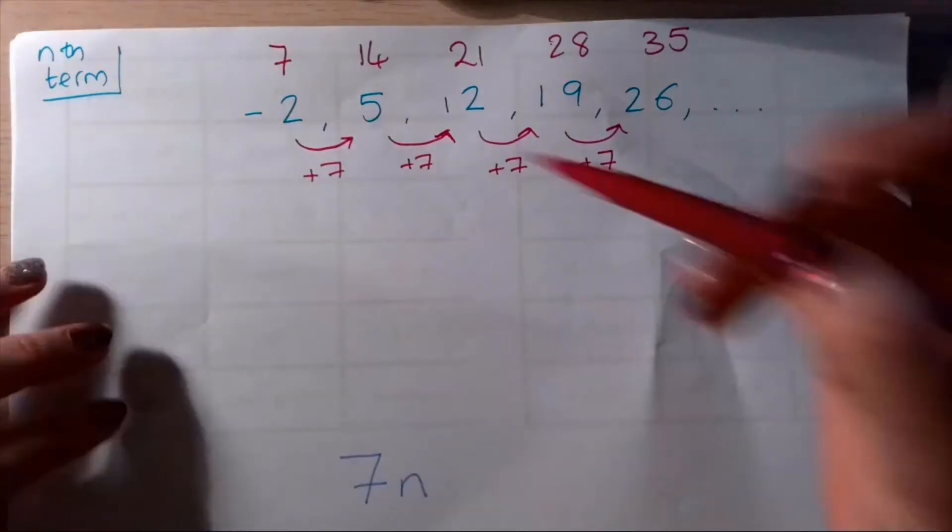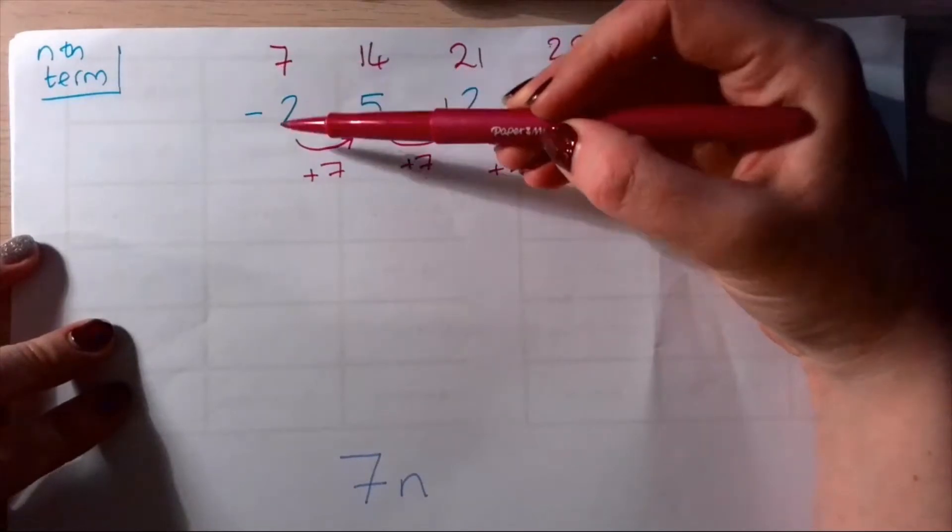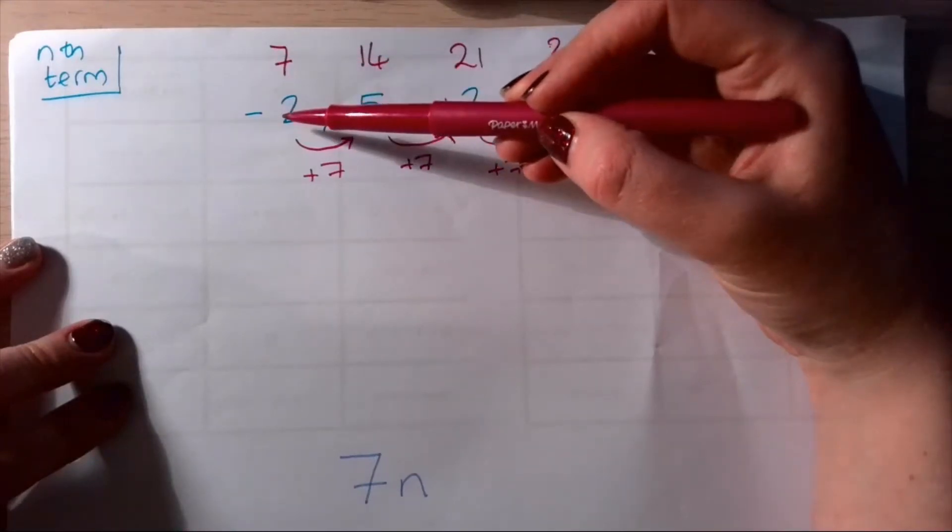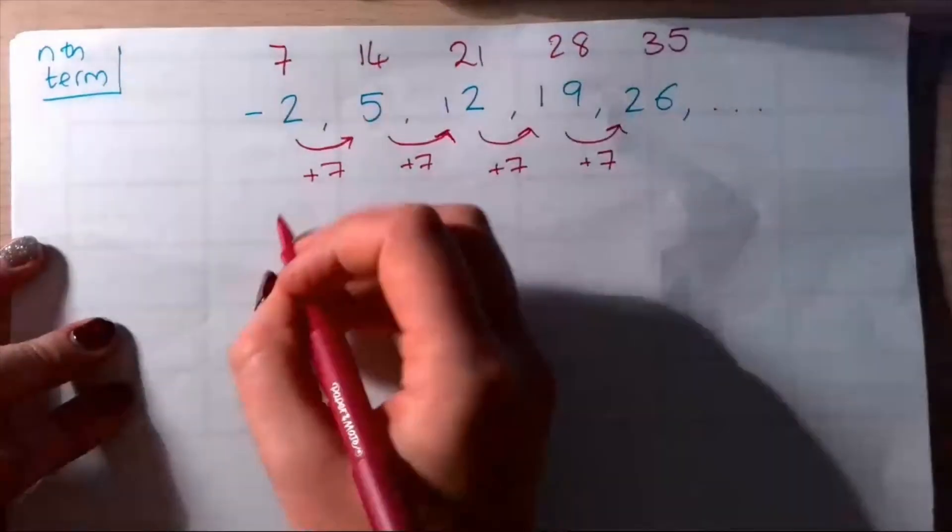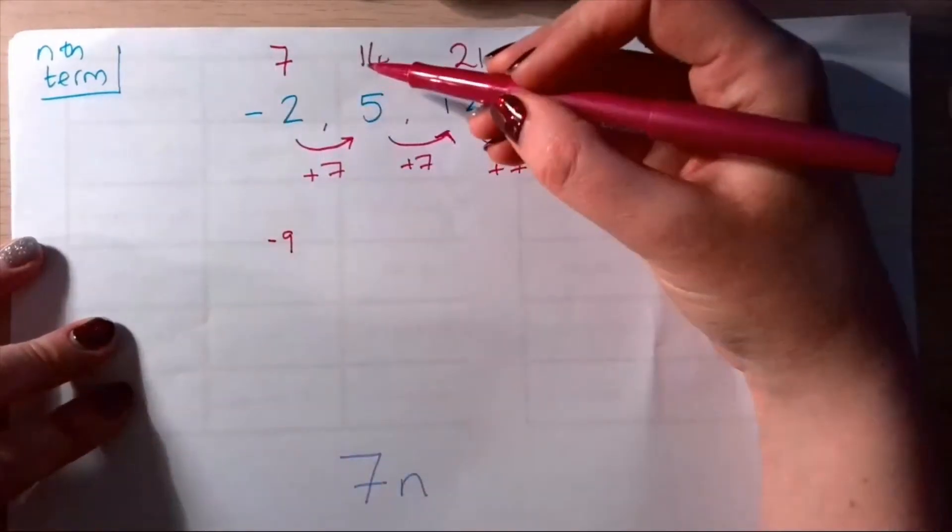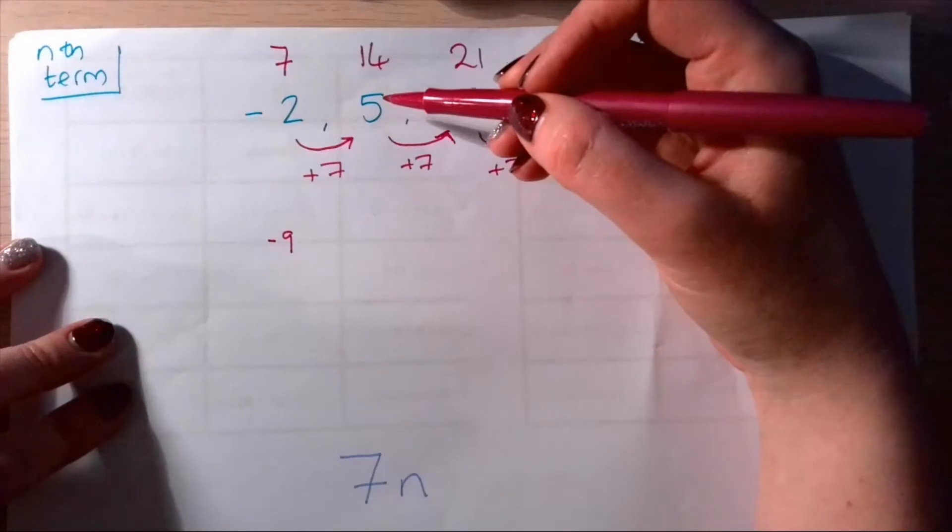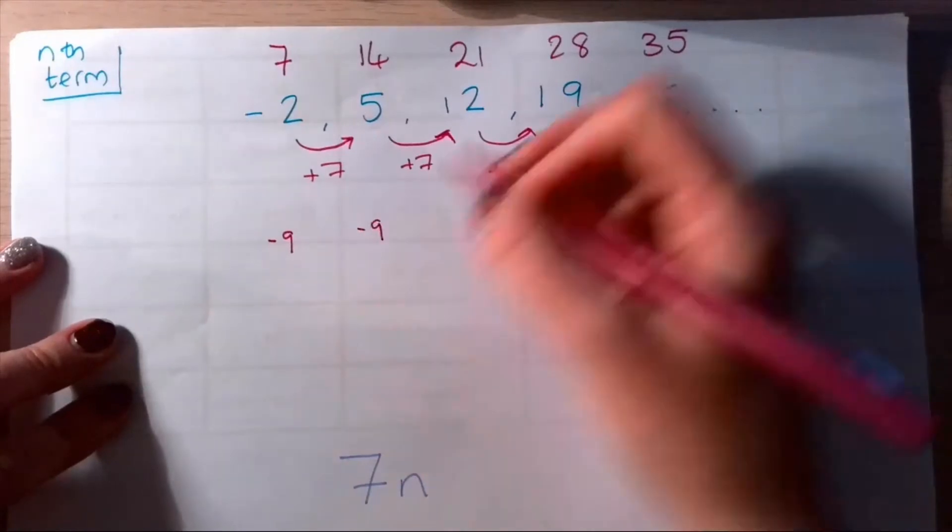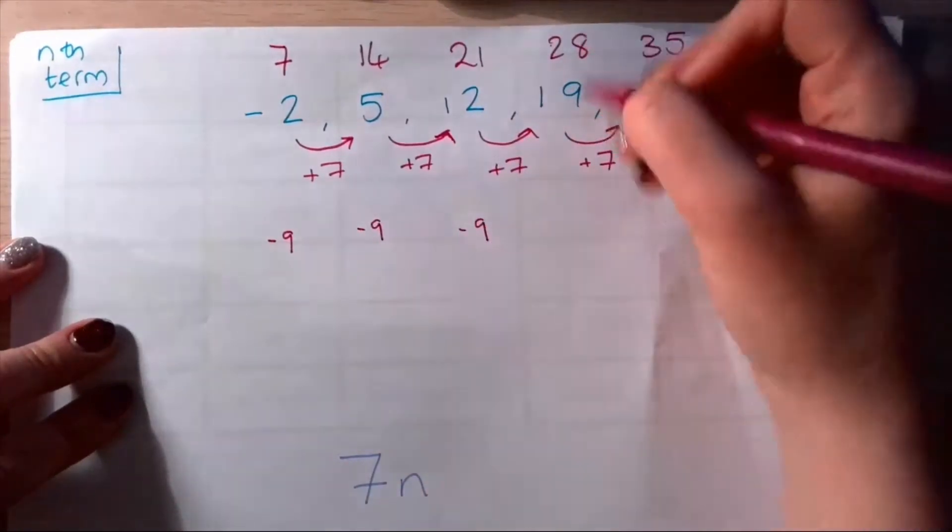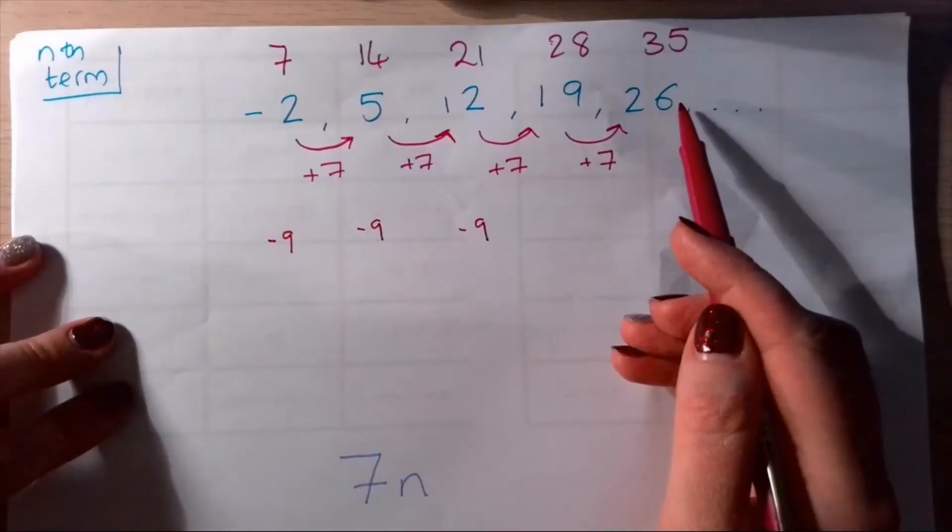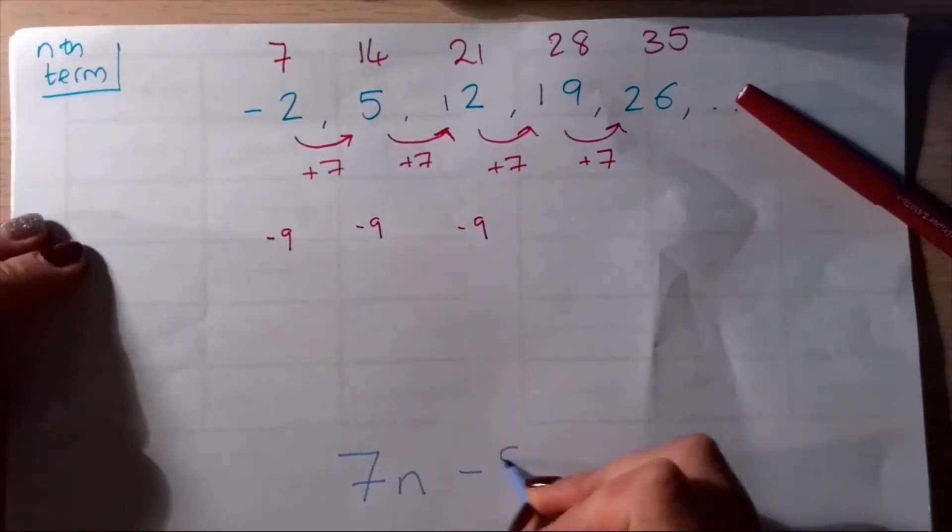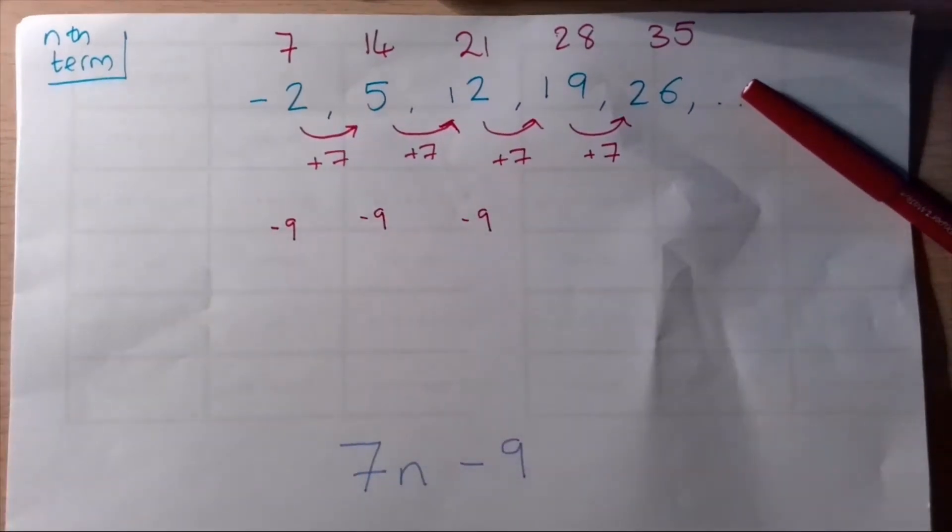Now we're going to say how do I get from seven to negative two? What's the calculation I have to perform? From seven down to negative two, I'm actually subtracting nine. I'm writing it below. How do I get from fourteen to five? I'm also subtracting nine. Each time you're going to see that's what happens. This sequence is our seven times table with nine taken off it. So we're going to have our nth term is 7n subtract 9.